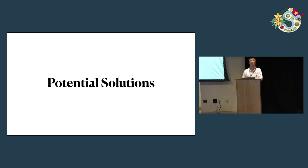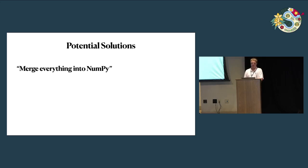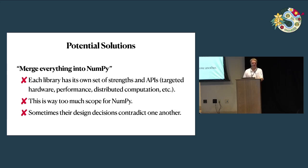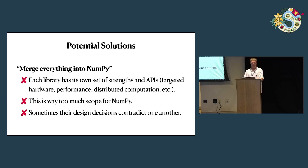There are a few things you might think about to solve this problem. The most obvious thing is: why do we have all these libraries? Let's just merge everything back into NumPy. Well, these libraries exist separately from NumPy for a reason — they all have their own strengths. They support different hardware and have different reasons for existing. And this would be way too much scope for NumPy.